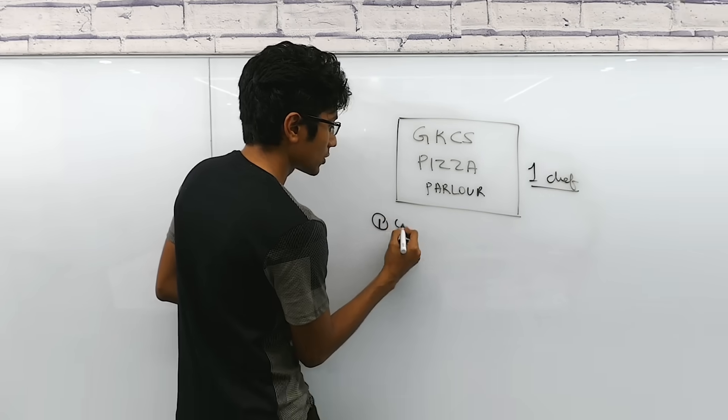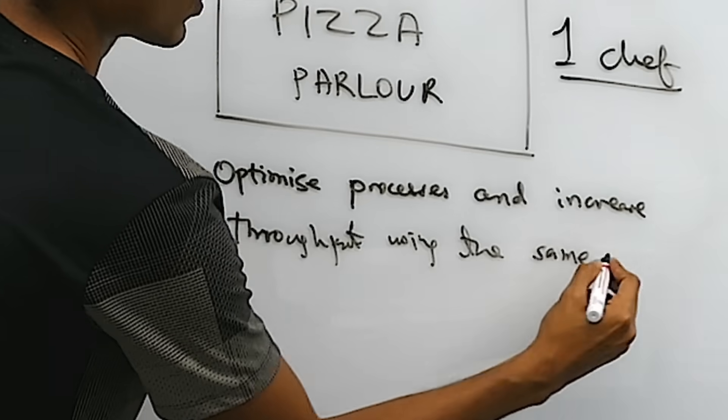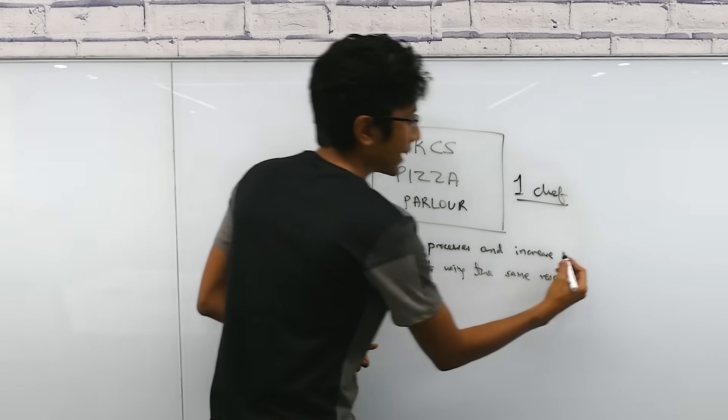You want to optimize processes and increase throughput using the same resource. When you think of the chef as a computer and put this in technical terms, it's called vertical scaling.